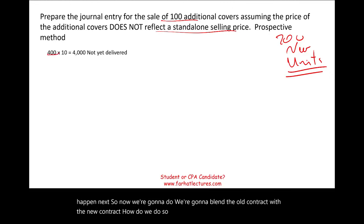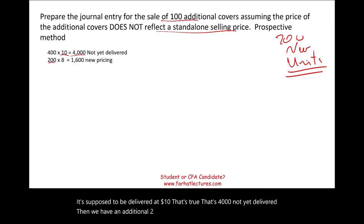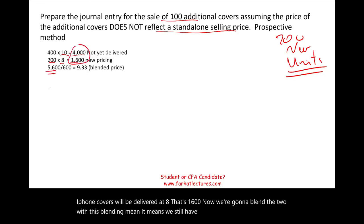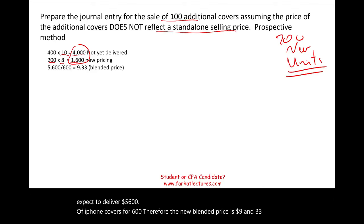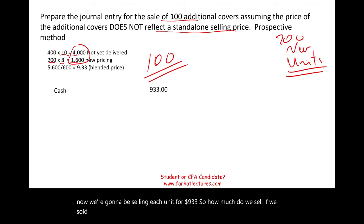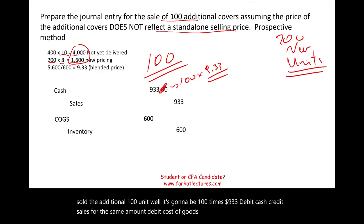We still have 400 iPhone covers not yet delivered at $10, totaling $4,000. Plus the additional 200 covers at $8, totaling $1,600. That's $5,600 to be delivered for 600 remaining units, giving a blended price of $9.33 per unit. So for the 100 additional covers sold after modification: debit cash, credit sales at $9.33 × 100; debit cost of goods sold, credit inventory. This is how blending works for a modification of an existing contract.